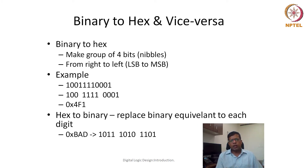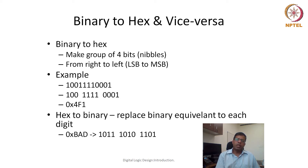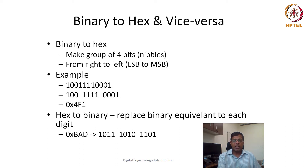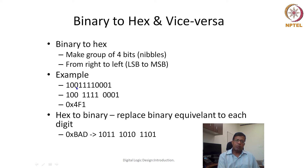To convert a binary number to a hexadecimal number, we make groups of 4 bits called nibbles, created from right to left — that is, from the least significant bit to the most significant bit. For example, take the number 1 0 0 0 1 1 1 1 1 0 0 0 0 1. Starting from right to left, the first nibble is 0 0 0 1, the next nibble is 1 1 1 1, and the third nibble is 1 0 0.